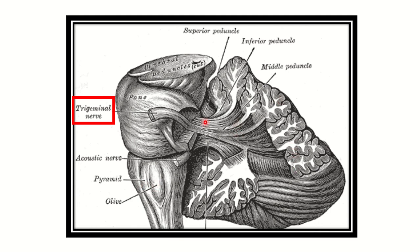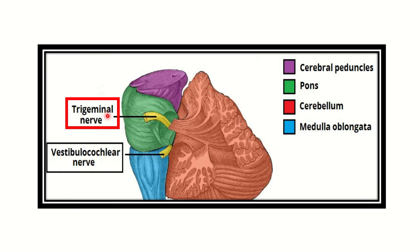From the cerebellum to the pons, we can see the peduncles: the superior peduncle, the inferior peduncle, and the middle peduncle. At the level of the peduncle connecting the pons with the cerebellum, a nerve is arising — this is cranial nerve number 5, the trigeminal nerve.